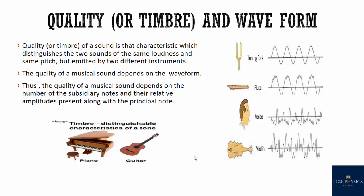Quality or timbre is that characteristic which distinguishes two sounds of the same loudness and same pitch but emitted by two different instruments. The quality of a musical sound depends upon the waveform — specifically upon the number of subsidiary notes and the relative amplitude present along with the principal note. Different instruments emit different subsidiary notes; a note on a piano has many subsidiary notes while the same note on a flute contains only a few.